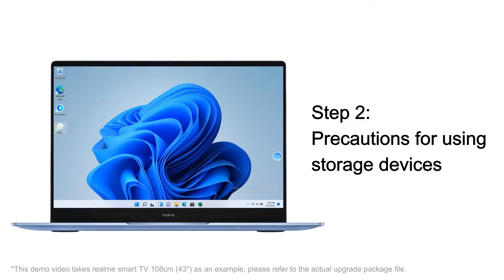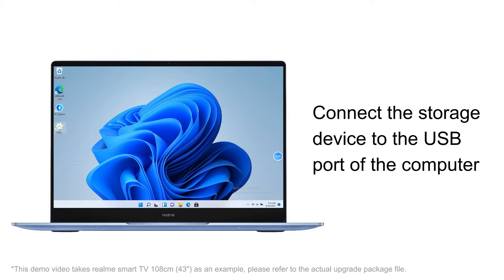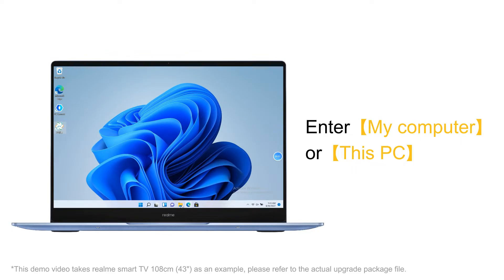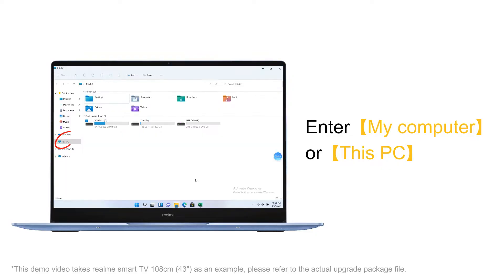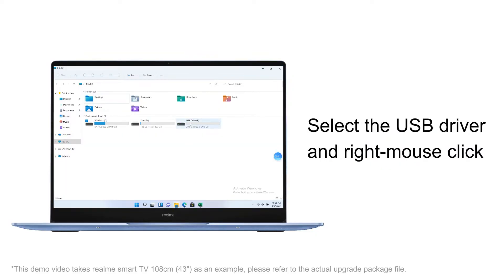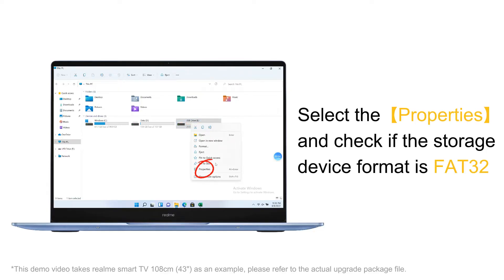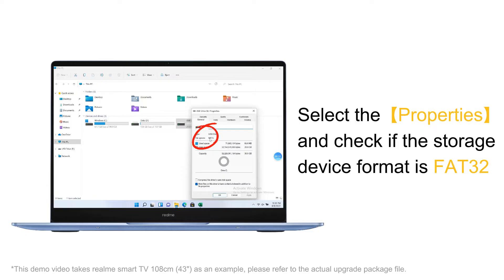Step 2: Precautions for using storage devices. Connect the storage device to the USB port of the computer. Enter My Computer or This PC. Select the USB drive and right-click. Select Properties and check if the storage device format is FAT32.